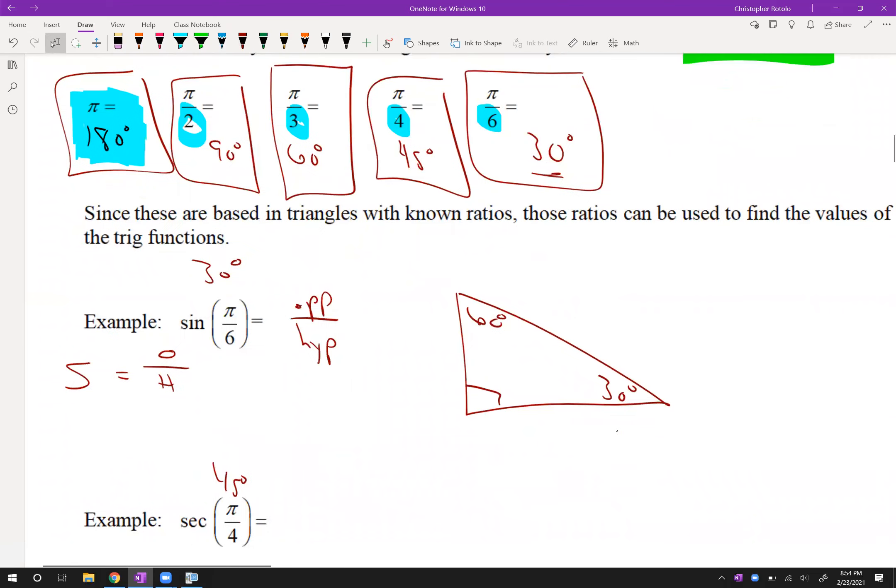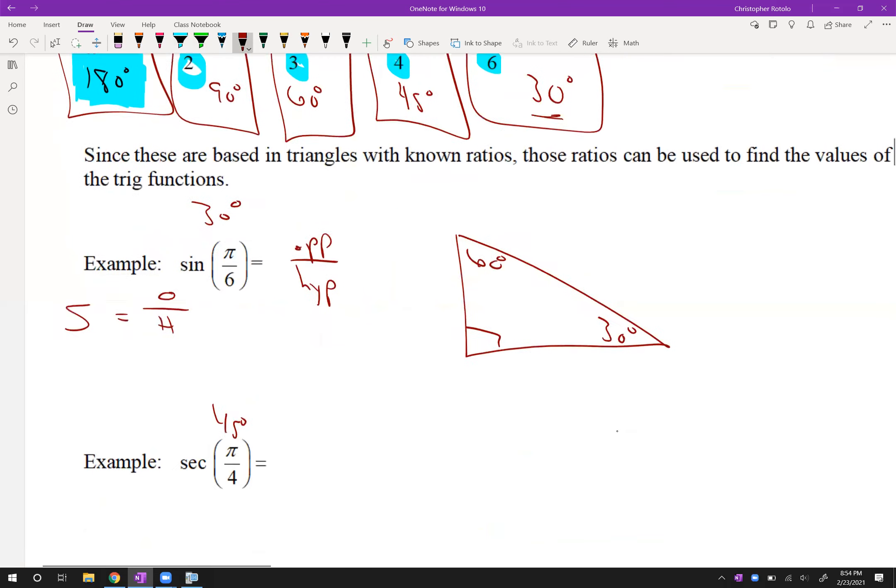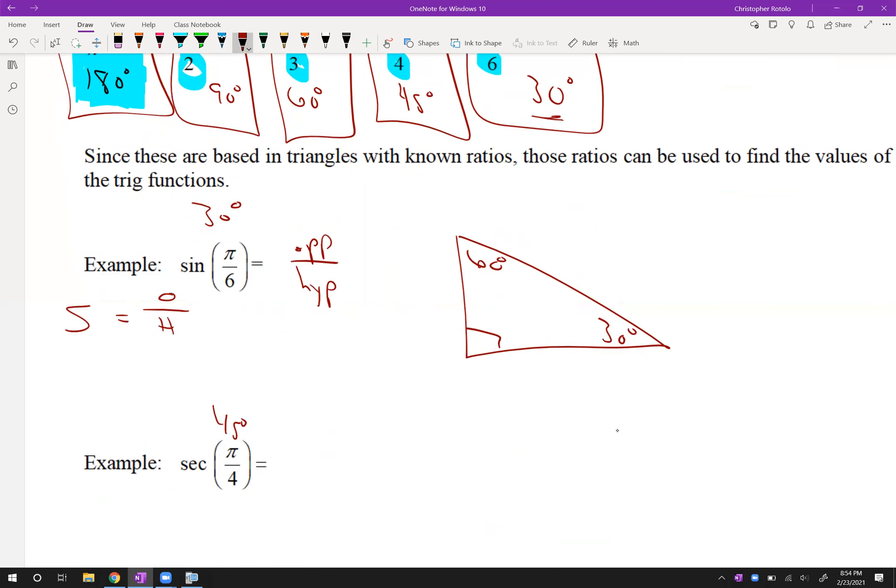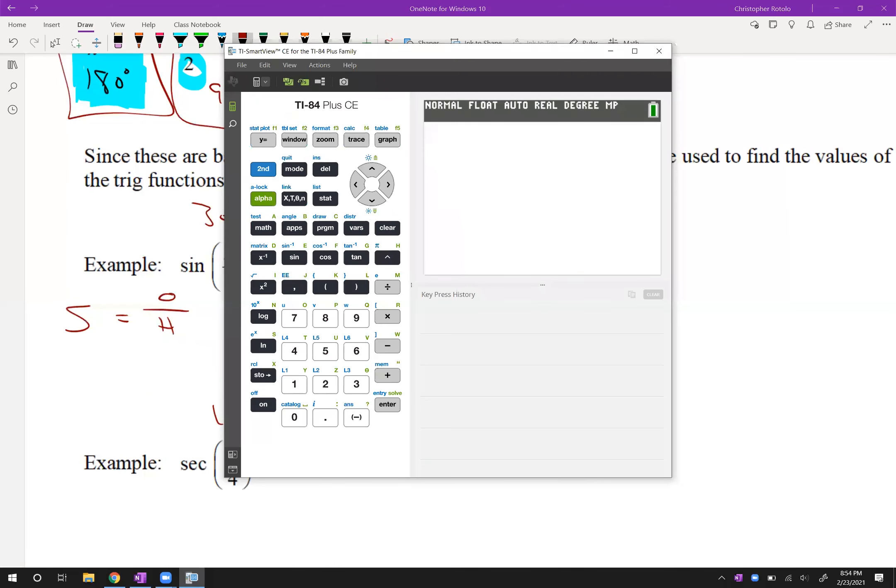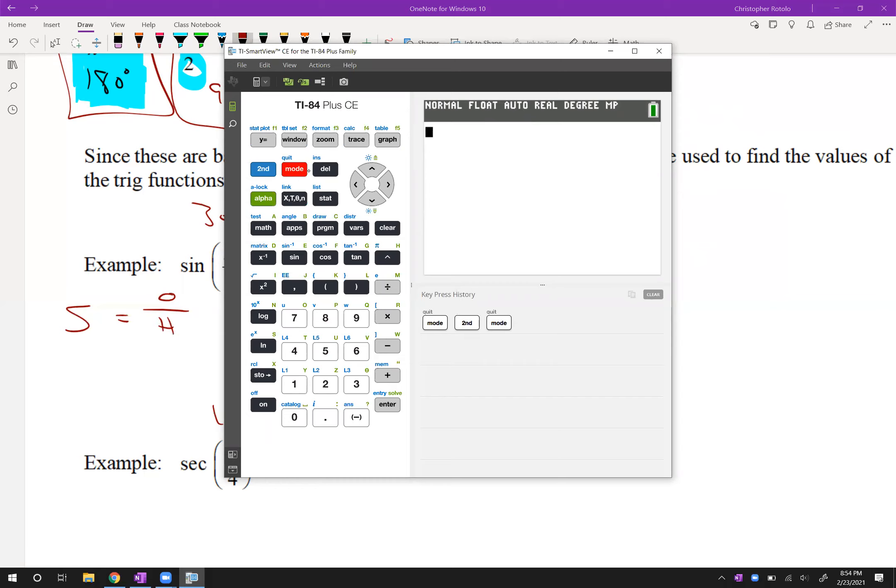Alright, next thing we want to check is how can we use this now that we know that pi over six is 30 degrees. Now we're thinking, okay, sine of 30 degrees. Well, I want to make sure that my calculator is in the correct mode. So I can kind of figure out what the answer should be to get started with, right? So how do we do that? So I'm going to check the mode on your calculator. And for me, I'm looking at this fourth line. See, radian degree. Degree is highlighted. I made sure that was already the case. So I know that I'm in degrees.